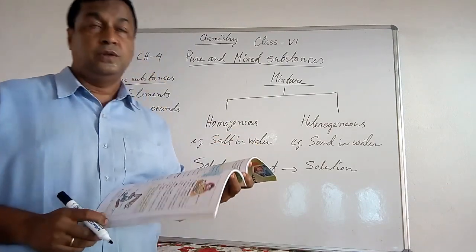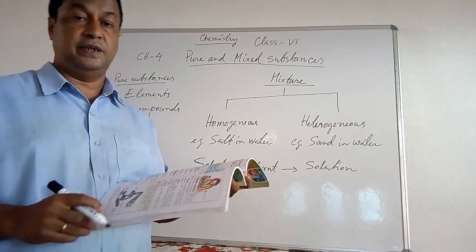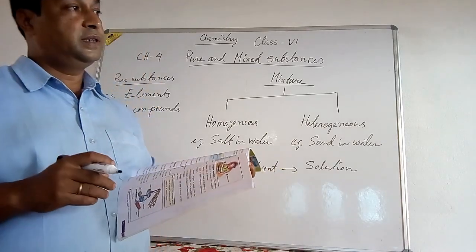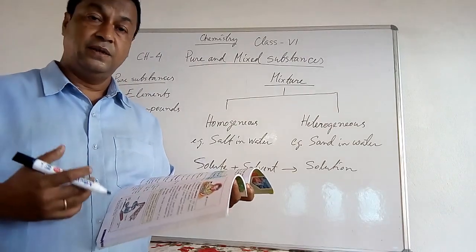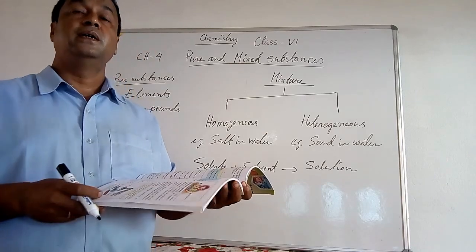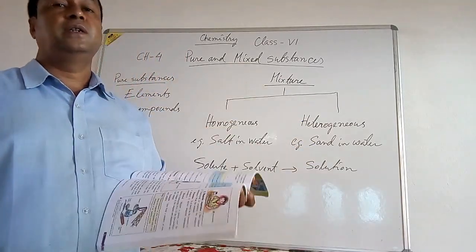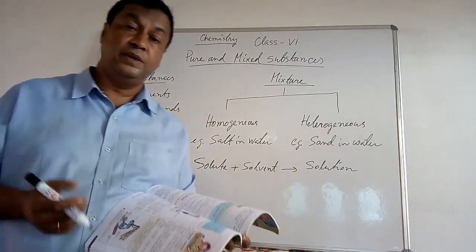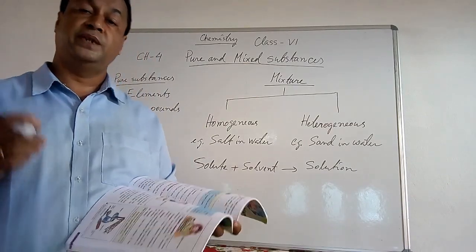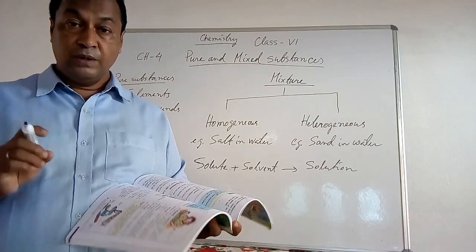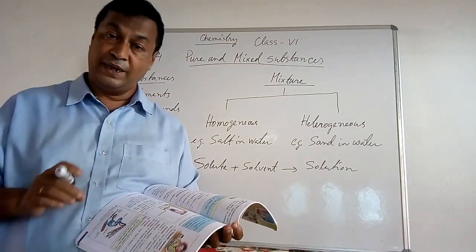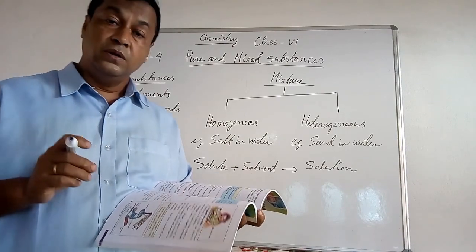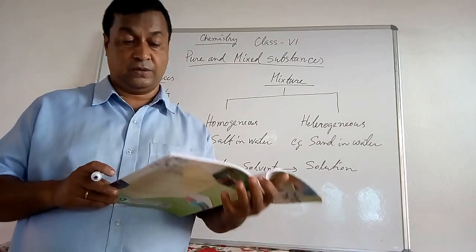The principle of winnowing is that when two components differ in weight — one lighter and one heavier — they can be separated by this process. Next is hand picking. By hand picking, you pick out the impure or undesirable particles from the pure substance. The principle is based on differences in size, shape, or color. For example, in households, mothers clean pulses or rice by removing pebbles and other unwanted particles by hand.